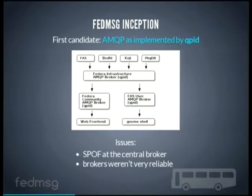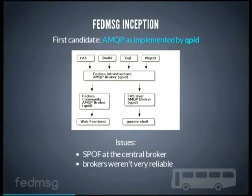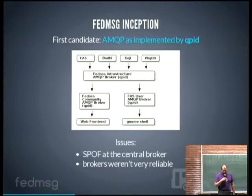The first implementation of FedMessage uses CupID — a central broker which took messages in from all the services in the distribution and sent them out to subscribers. The issue with this is that you get a single point of failure in your central broker. In Fedora's experimentations, the brokers weren't really reliable — the CupID services had a tendency to tip over and crash.